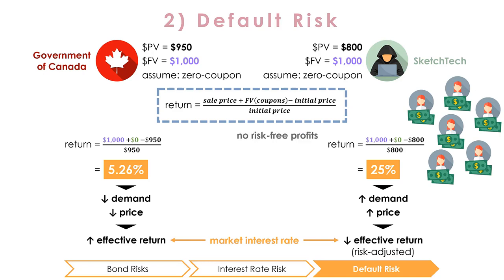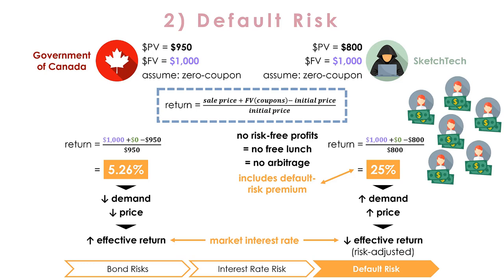This means that there are no risk-free profits to be made — that is, investors cannot profit by taking advantage of improperly priced securities through arbitrage. Therefore, it must be that this 25% stated return reflects the probability of default, which has been priced into the bond. This makes intuitive sense because, as investors, we know that if SketchTech is more likely to default, we would only take on the risk if SketchTech's bond costs less than the government bond that can provide the same stream of cash flows at no risk.